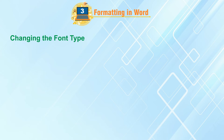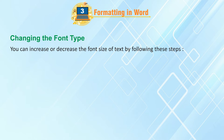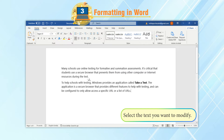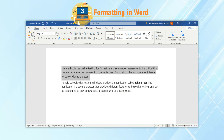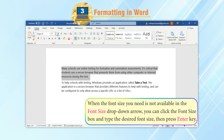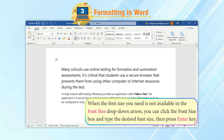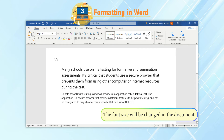Changing the Font Size. You can increase or decrease the font size of text by following these steps: Select the text you want to modify. On the Home tab, click on the drop-down arrow next to the Font Size box from the Font group and select the desired font size. When the font size you need is not available in the Font Size drop-down, you can click the Font Size box and type the desired font size, then press the Enter key. The font size will be changed in the document.